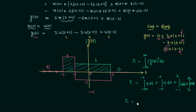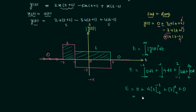From −∞ to −2, |y(t)|² = 0, contributing 0. From −2 to −1, |y(t)|² = 4, giving 4·[t] from −2 to −1 = 4·(1) = 4. From −1 to 2, |y(t)|² = 1, giving [t] from −1 to 2 = 3. From 2 to ∞ the contribution is 0. Therefore the total energy of y(t) = 4 + 3 = 7.